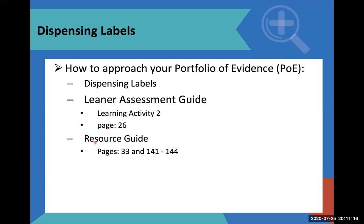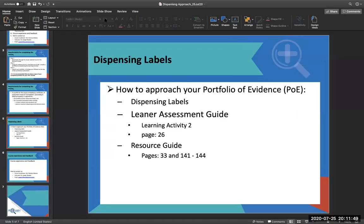There are two documents we always use: the learner assessment guide and the resource guide. The resource guide is your manual where you need to read the theory. The learner assessment guide has eight learning activities. Dispensing labels is on page 26, and for you to pass and get your labels correctly, you have to read page 33 and then pages 141 up to 144. That is what we are going to go through at this point in time.